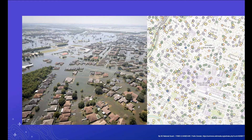Insurers have analysts who are responsible for analyzing their portfolios — the policies that they have in their business — and understanding if they have too much financial risk and how they can mitigate that risk. So they use GIS to analyze their policy locations, and they're looking for things like concentrations of high value policies. For example, if you have written billions and billions of dollars of insurance in a very small area on the coast of Florida, that would be a risk to your business that you may want to take steps to mitigate.